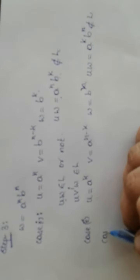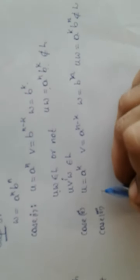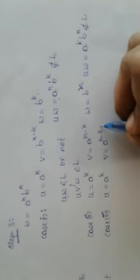Now for case 2, let U = A^K, V = A^(N-K), and W = B^K. We need to check whether UW belongs to L or not. UW will be A^K B^N. As the parts K and N are not equal, it does not belong to our language. So in case 2 also we proved that the word generated by clubbing UW does not belong to our language L.